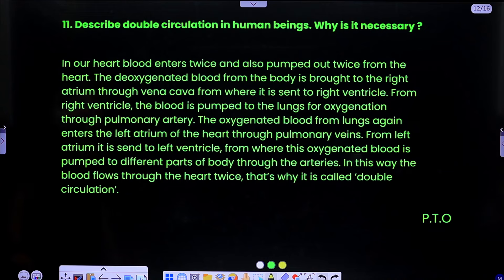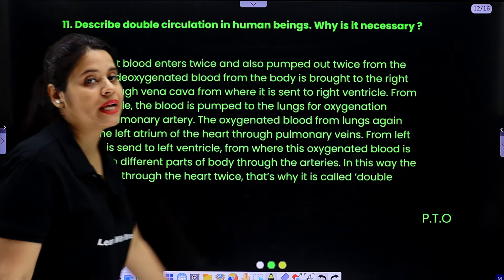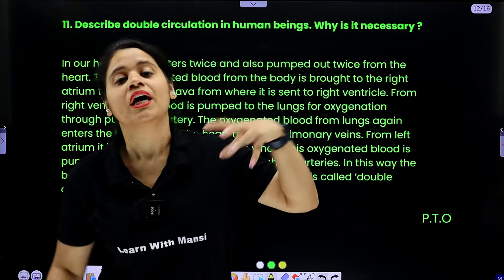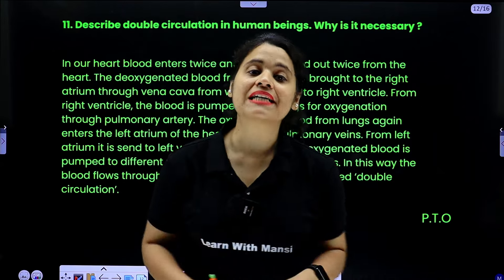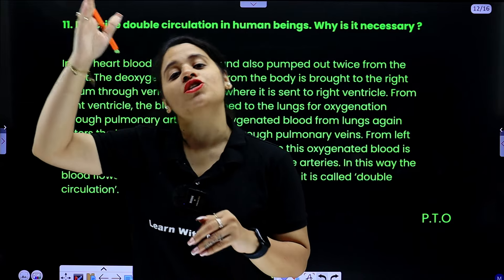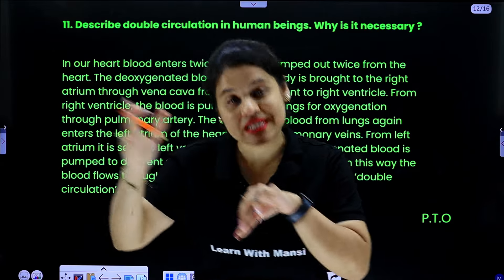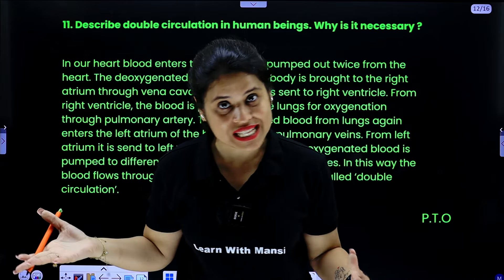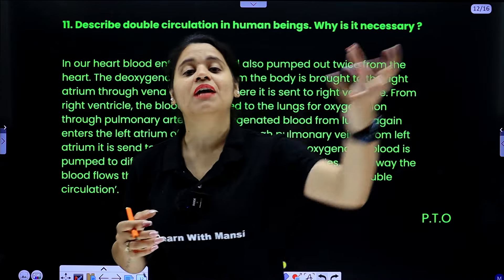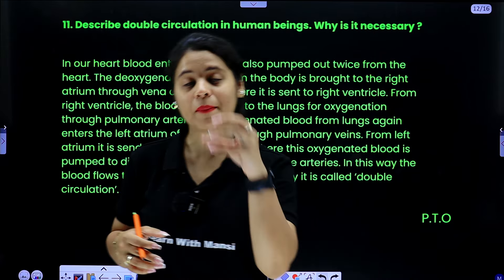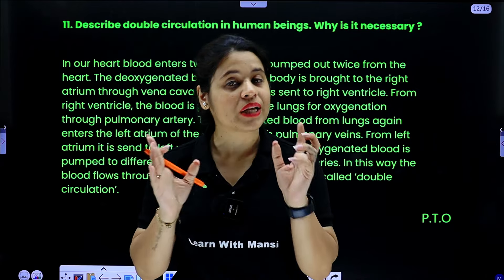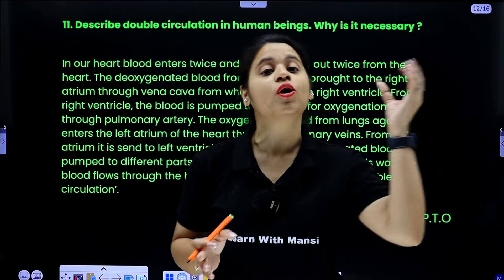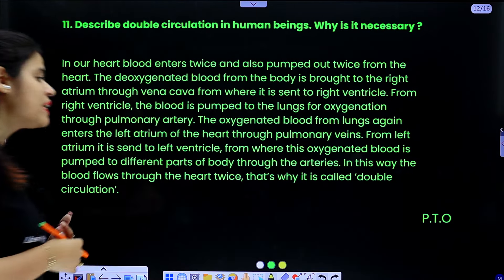Question 11: describe double circulation in human beings — why is it necessary? In double circulation, all the de-oxygenated blood from the whole body goes into the heart, which sends it to the lungs. The lungs oxygenate the blood, and then oxygenated blood comes back to the heart, which then sends it to the whole body. The blood flows through the heart twice in the whole process, passing through the body parts once and through the lungs once — that is why it is called double circulation.